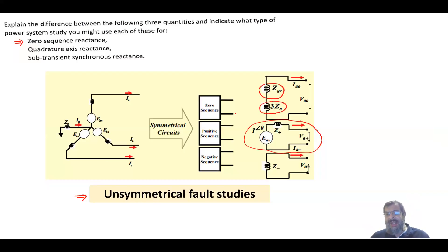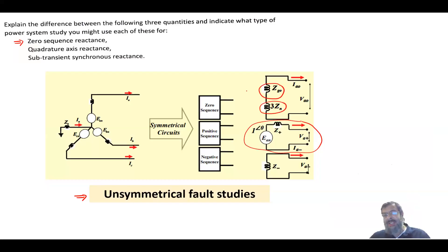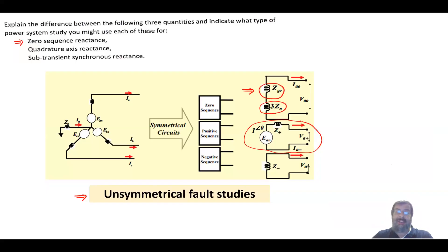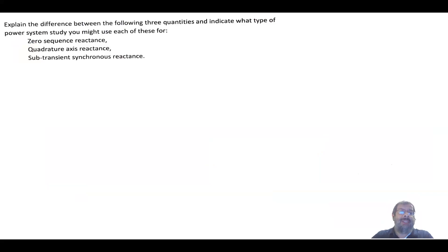The 3Zn term represents the reactance or impedance in the neutral multiplied by three, but that's not what the question was asking. The zero sequence reactance is specifically used in the modeling of the generator under unsymmetrical fault studies.